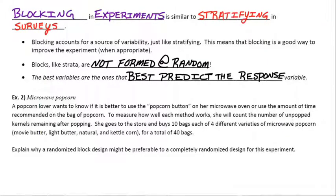So we're going to start here at example 2, the microwave popcorn. It says a popcorn lover wants to know if it is better to use the popcorn button on a microwave oven or use the amount of time recommended on just the bag of popcorn. Kind of an interesting yet still easy idea. Some microwaves have just a popcorn button, you throw in the bag and you press the popcorn button. Is that more effective than following the directions on the bag of popcorn and cooking it for a certain amount of time?